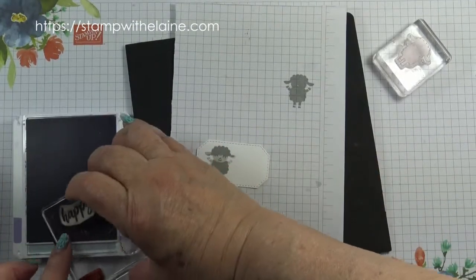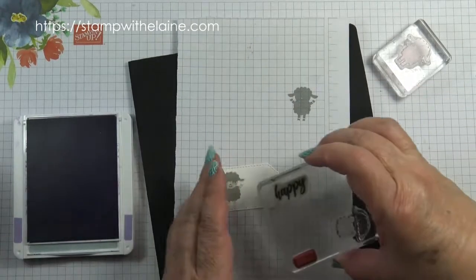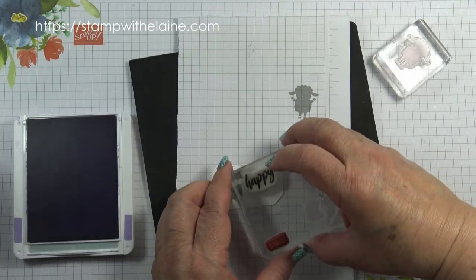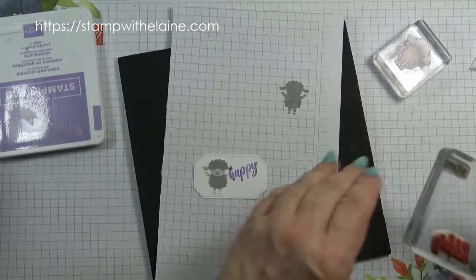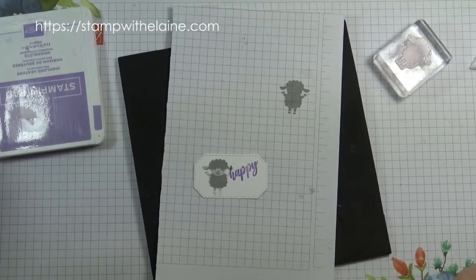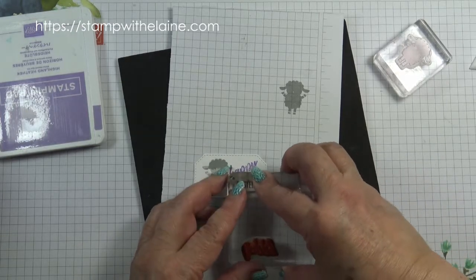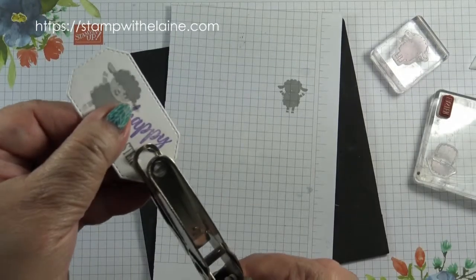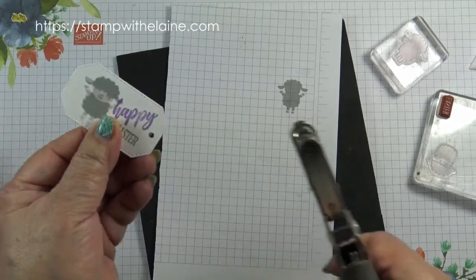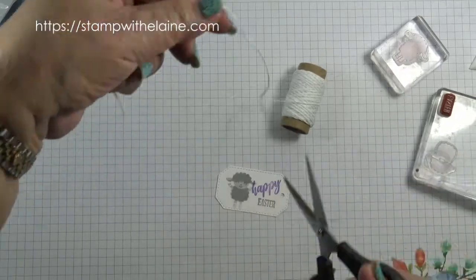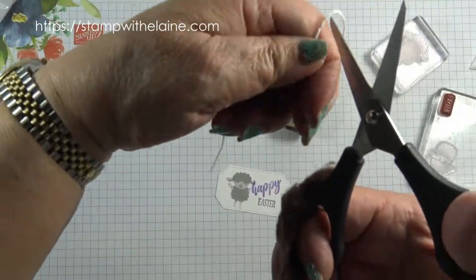Next I'm going to stamp Happy from the Wish for Everything stamp set in Highland Heather, and then Easter in the smoky slate just underneath. Punch a hole at the top. Make sure it's in the middle.